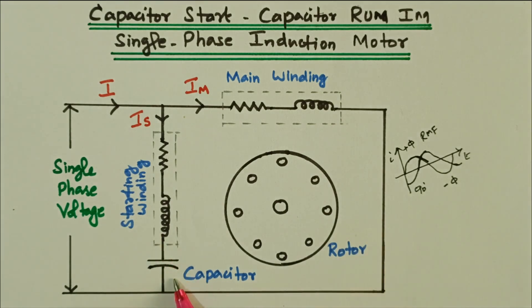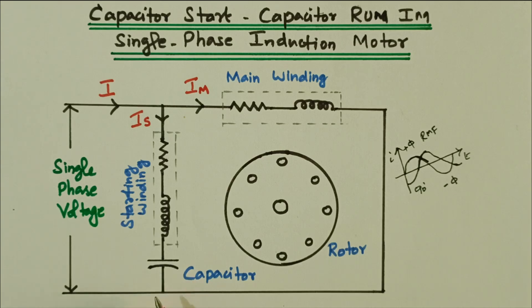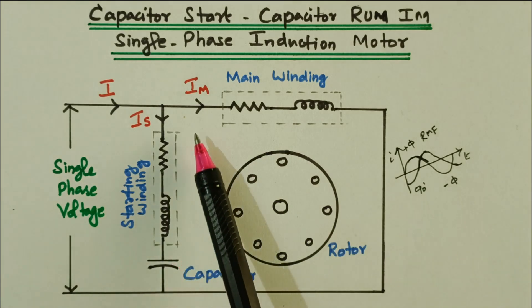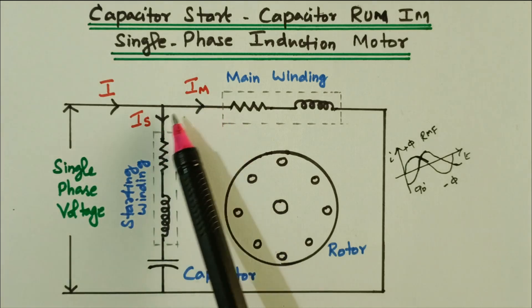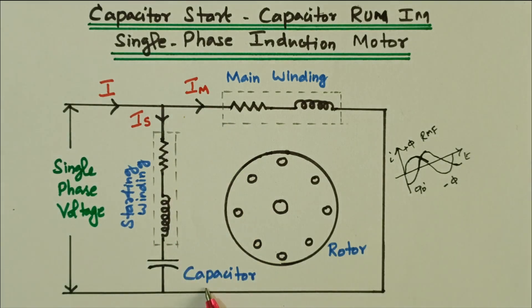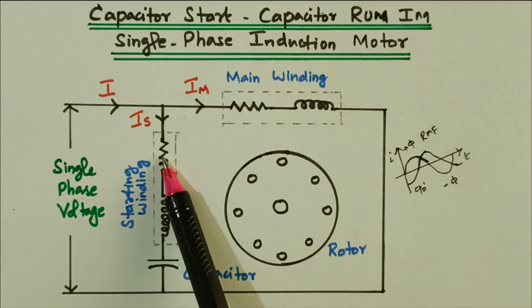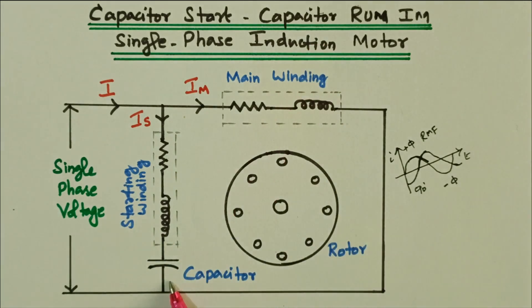To make a phase difference between the currents, a capacitor is connected in series with the starting winding. We know that a capacitor leads the current — the current leads the applied voltage by approximately 90 degrees. There should be a phase difference between the main winding current I_m and starting winding current I_s. Here we are not using a centrifugal switch. The starting winding is used for both starting and running purposes — it is not disconnected, unlike the previous case.